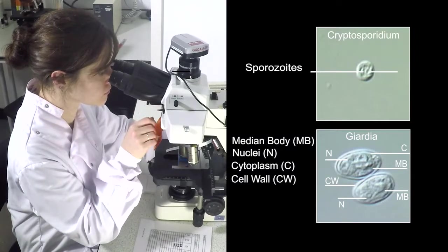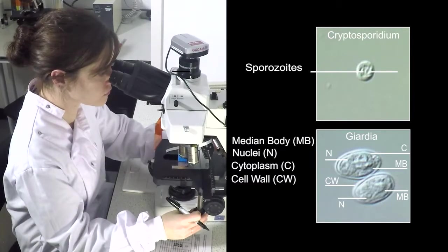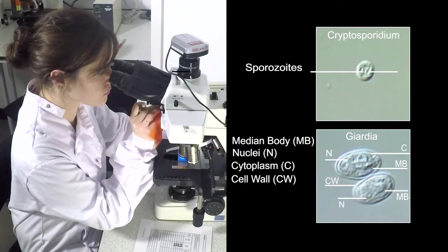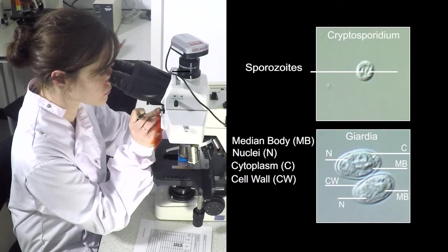Sporozoites associated with Cryptosporidium oocysts should be recorded. For Giardia cysts, the presence of a cell wall, cytoplasm, median bodies, axonemes, and nuclei should be noted.